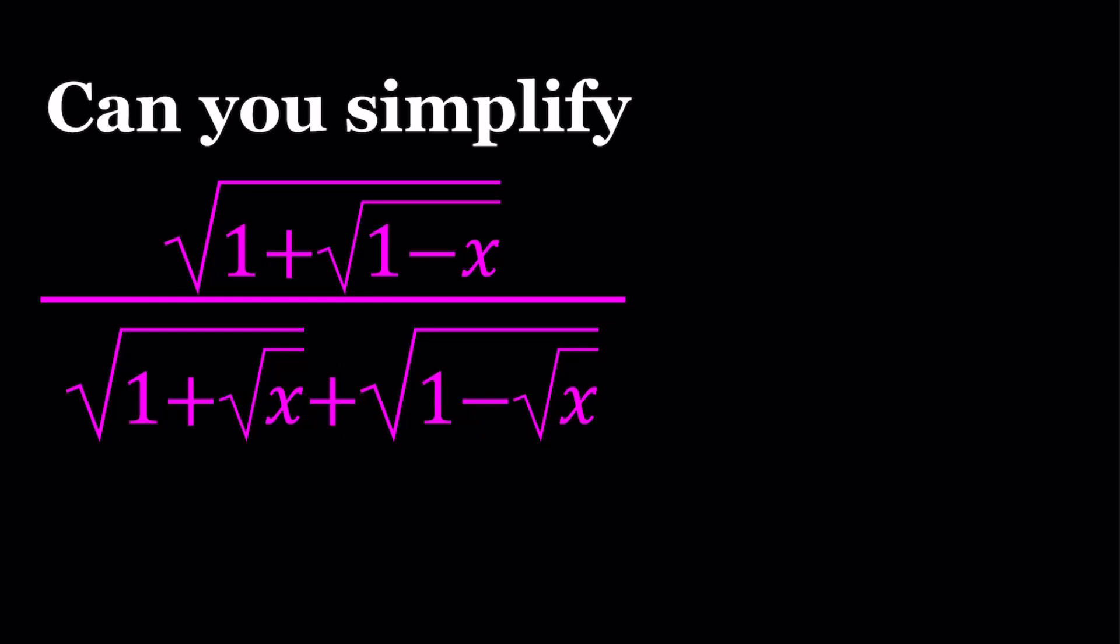We have the square root of 1 plus the square root of 1 minus x, and that is divided by the sum square root of 1 plus square root of x plus the square root of 1 minus square root of x. It's hard to read. We're going to simplify this expression.